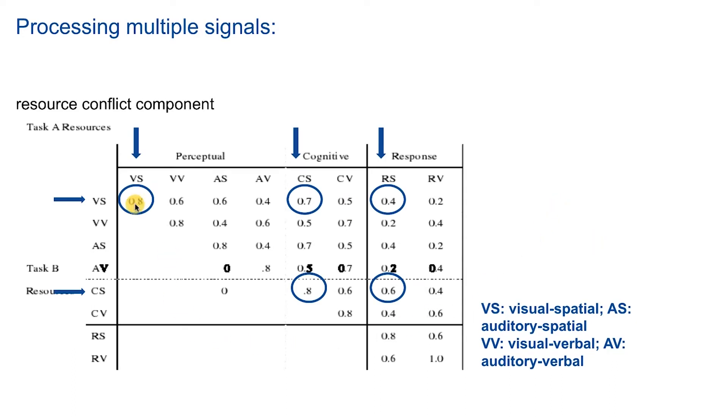For example, driving at night and looking at a map at the same time definitely shares the same cognitive resource of visual spatial perception. But visual spatial perception of the Task B also conflicts with the response. So we just use these kind of values that we have and add them up.